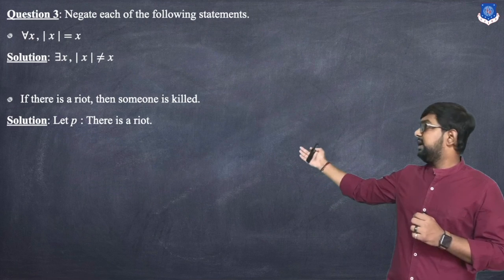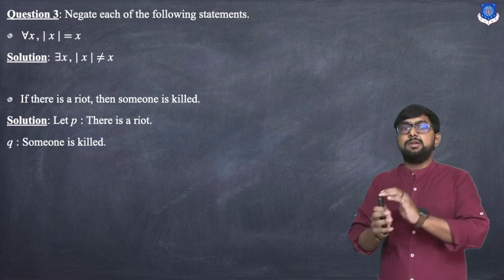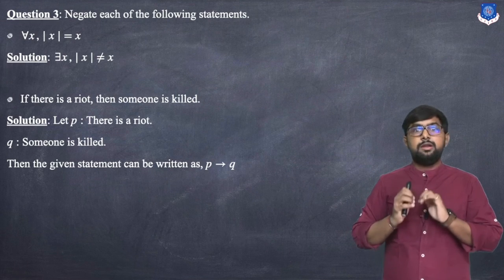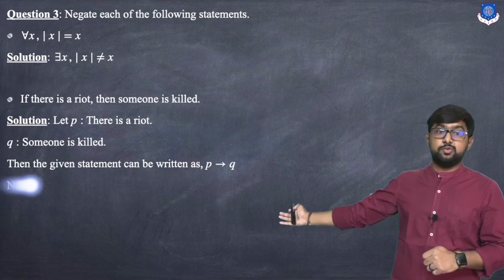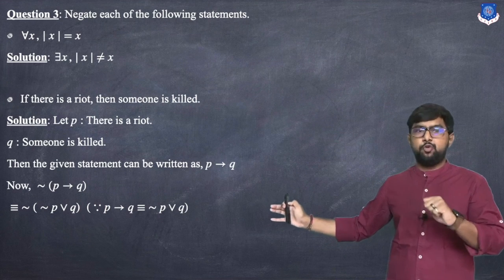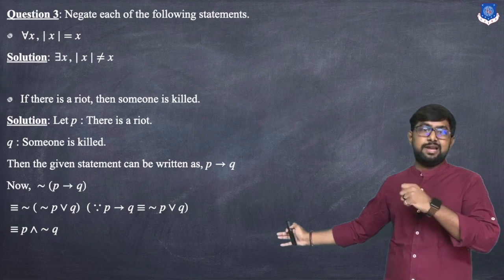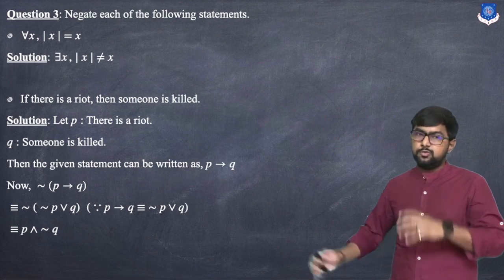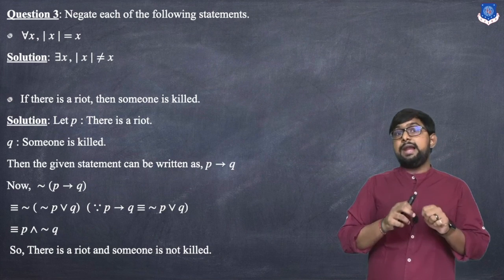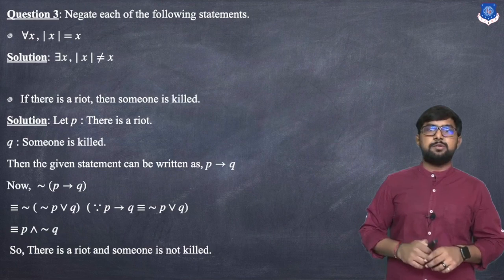Next, negate 'if there is a riot then someone is killed'. Let P = 'there is a riot' and Q = 'someone is killed'. The given statement is P → Q. Since P → Q ≡ ¬P ∨ Q, the negation is ¬(¬P ∨ Q) = P ∧ ¬Q. In words: there is a riot and no one is killed.